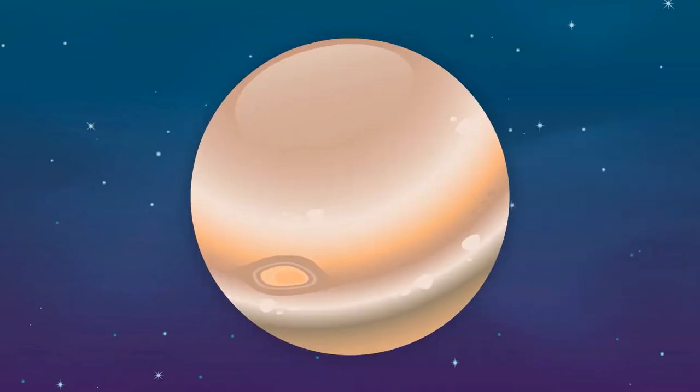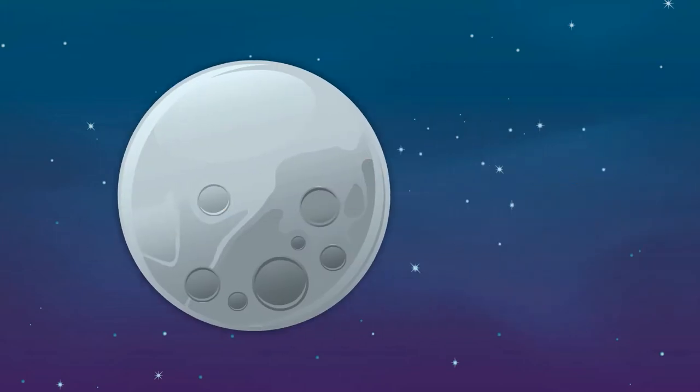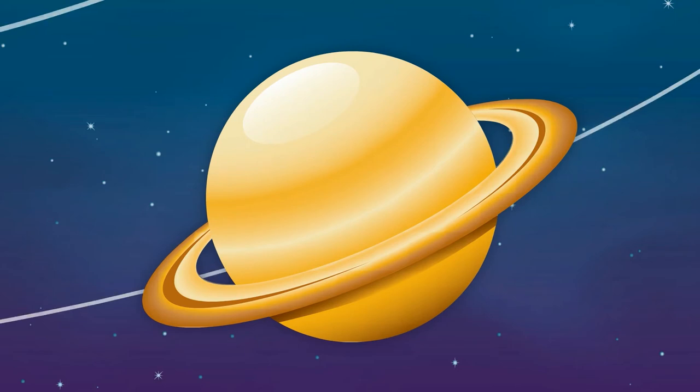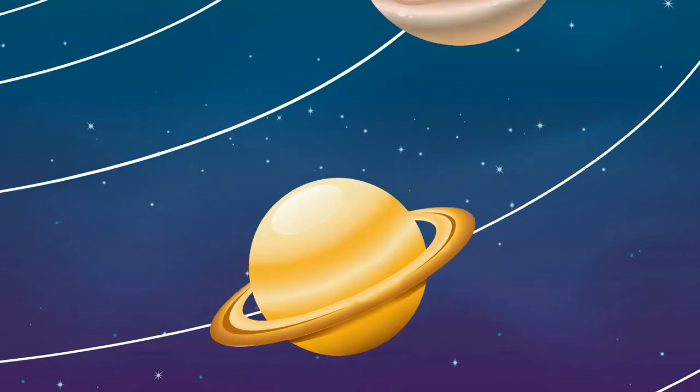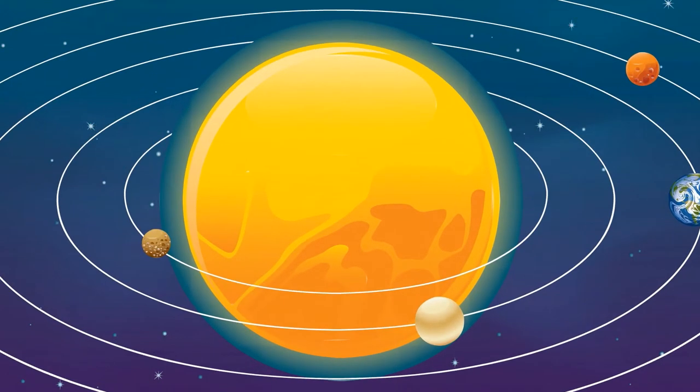There are other planets near to us in space as well as moons and asteroids. Along with the Earth they form our solar system. The Sun is about 93 million miles from Earth. It sits right at the center of our solar system and provides us with heat and light.